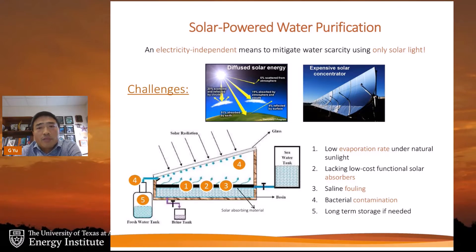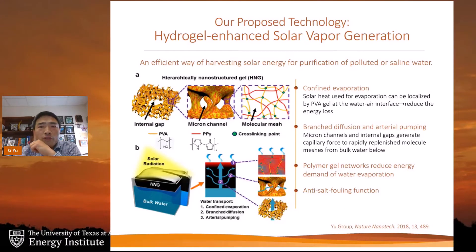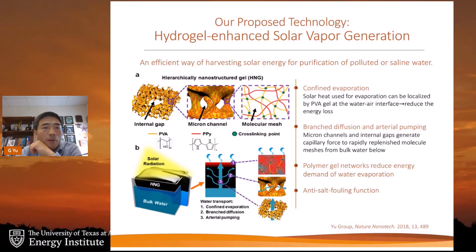Additional limitations include the cost of the solar absorber, fouling problems similar to membranes, and bacterial contamination making long-term storage a challenge. Back in 2018, we developed a technology using the first hydrogel evaporator, taking advantage of polymer-water interactions that we can tune between water and hydrophilic polymers. Our initial design uses polyvinyl alcohol (PVA) as the molecular backbone and polypyrrole (PPy) as the solar absorber.